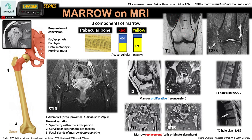On the T2-weighted fat-saturation sequence, the yellow marrow now has a darker signal because fat is suppressed. The red marrow becomes bright in signal again because of its higher water content. When comparing red marrow to adjacent muscle, it should be intermediate or iso-intense to be considered normal.